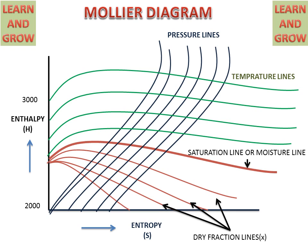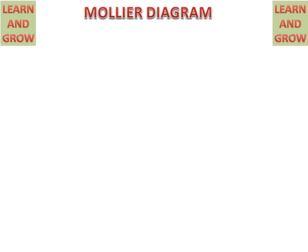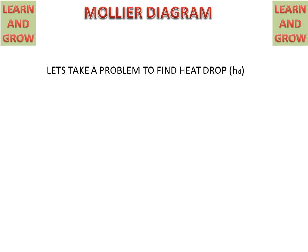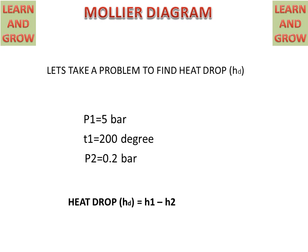Now we take a problem for reading the Mollier Diagram to find heat drop. At point 1, pressure P1 is 5 bar and temperature T1 is 200 degrees Celsius. At point 2, pressure P2 is 0.2 bar, and T2 is not given. We can find the heat drop using the Mollier Diagram; heat drop equals H1 minus H2.